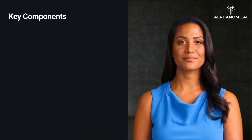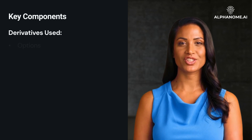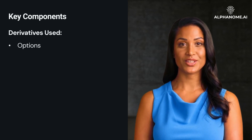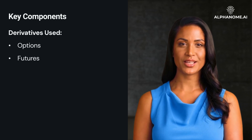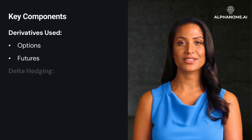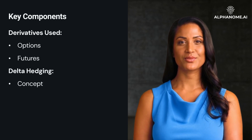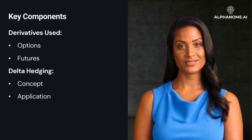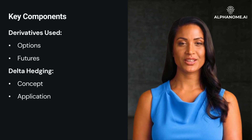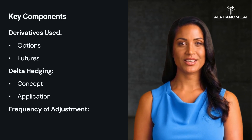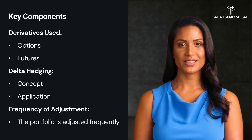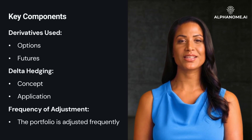Key Components. Derivatives used include options — call and put options are used to hedge against price movements — and futures, where futures contracts can lock in prices for buying or selling assets at a future date. Delta Hedging: delta represents the rate of change of an option's price relative to the price of the underlying asset. An investor adjusts their position in options to maintain a delta-neutral position, meaning the portfolio's overall value does not change significantly with small movements in the underlying asset's price. The portfolio is adjusted frequently, often daily, to maintain the hedge as market conditions change.